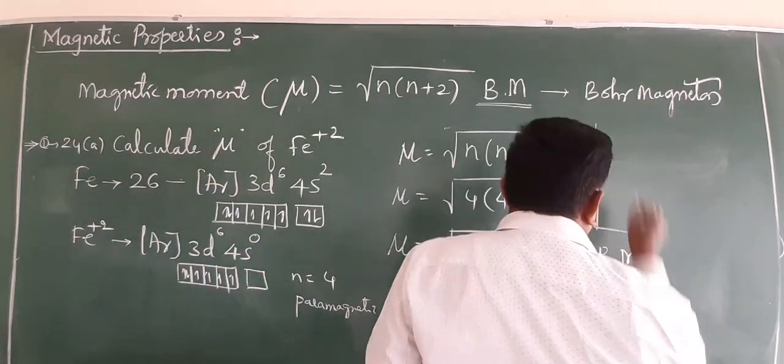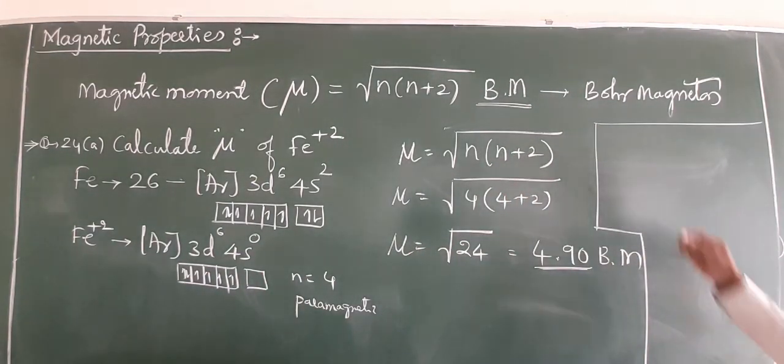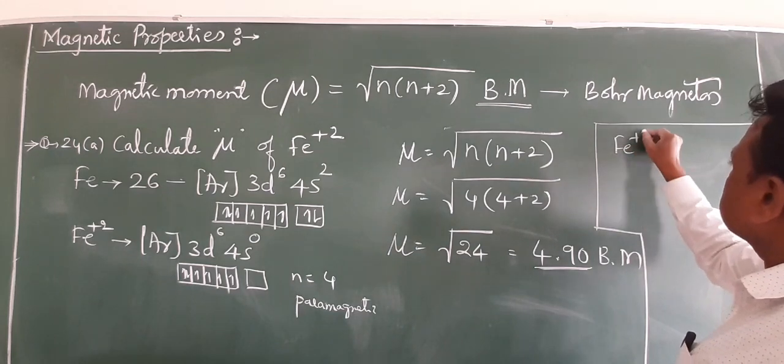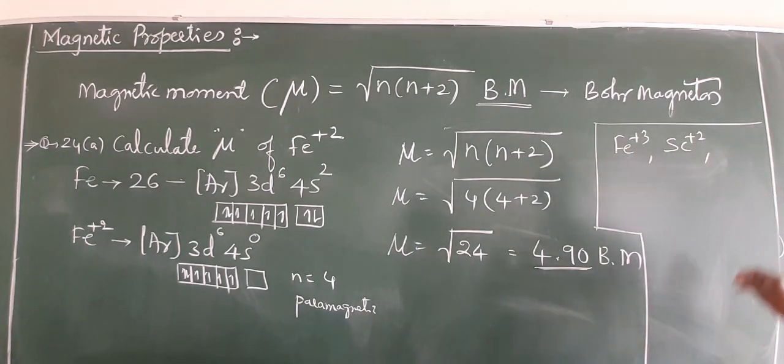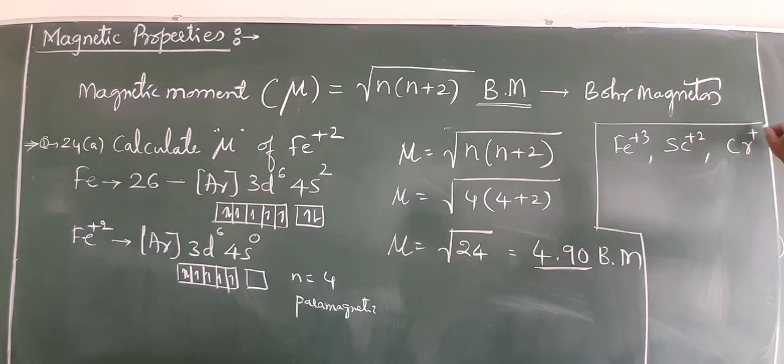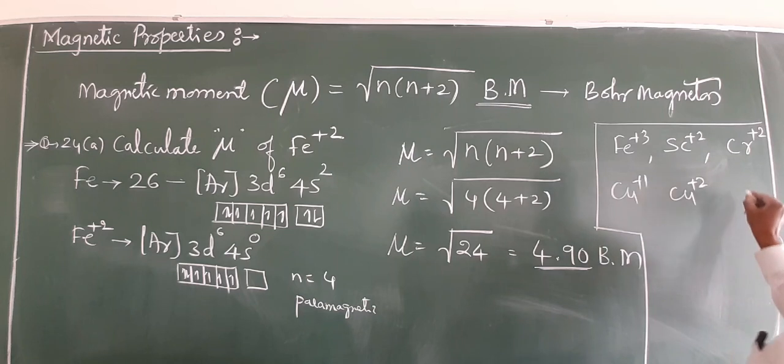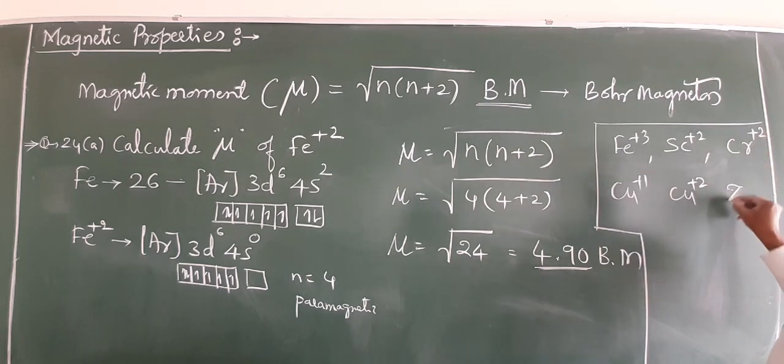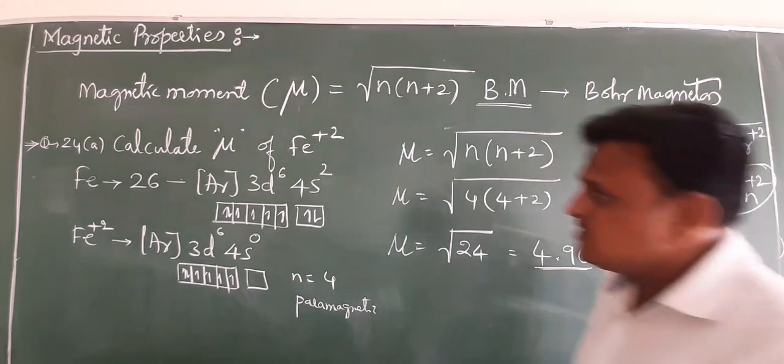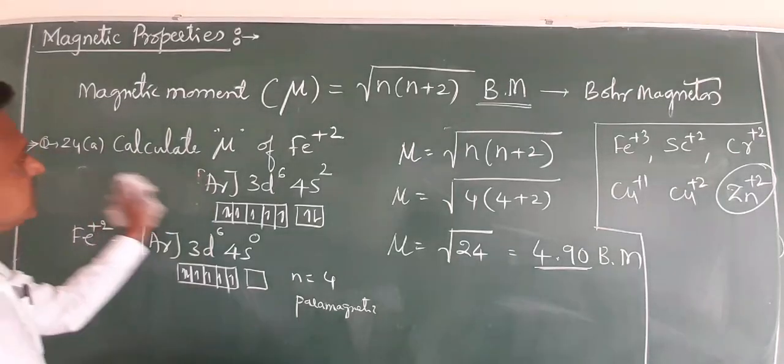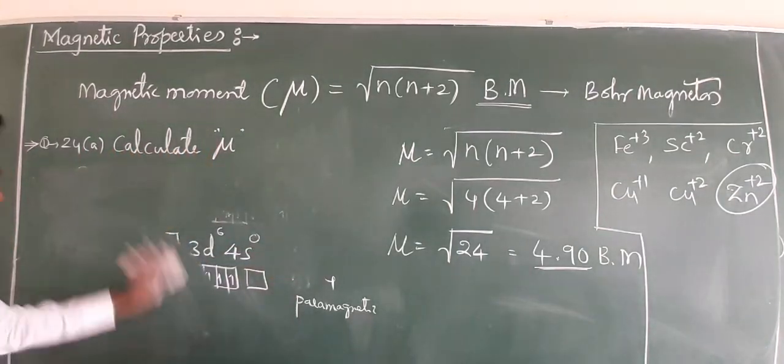If you want to practice apart from this, how can you practice? You can practice these examples: Fe³⁺, Sc²⁺, Cr²⁺, Cu⁺, Cu²⁺, and Zn²⁺. I'll use one more example to demonstrate.